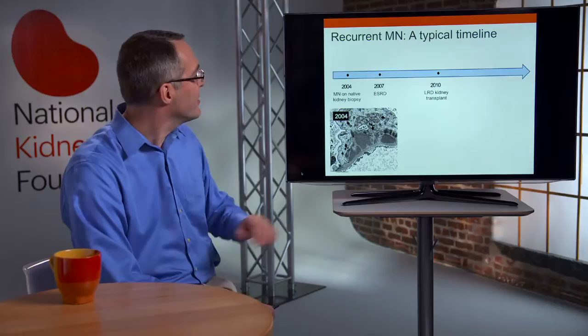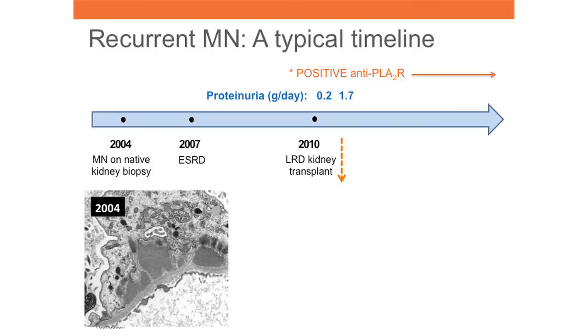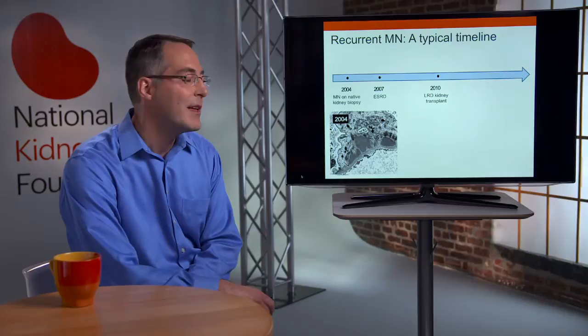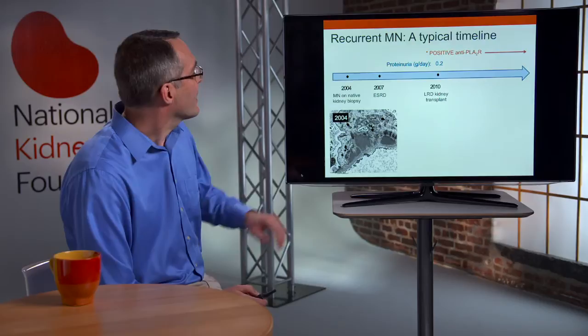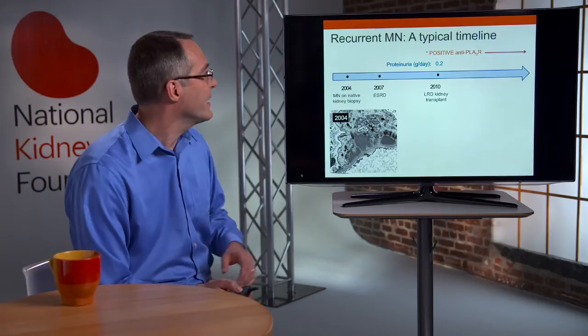Evidence for this sequence comes from the Heymann nephritis rat model and from patients who develop recurrent membranous nephropathy in an allograft. In one of our cases, a 2004 kidney biopsy showed membranous nephropathy with large deposits and injured podocytes. The patient developed end-stage renal disease in 2007 and received a kidney transplant three years later. We found the patient was positive for anti-PLA2R prior to and just after transplantation. Initially proteinuria was very low at 0.2 g/day, but it quickly increased to 1.7 g/day, and a biopsy confirmed recurrent membranous nephropathy with C3 and IgG deposits.